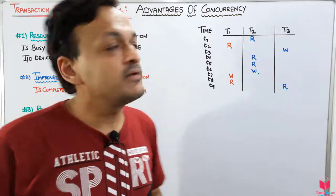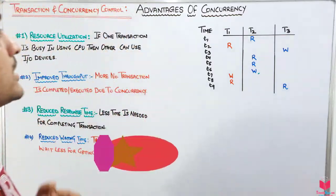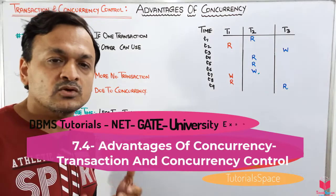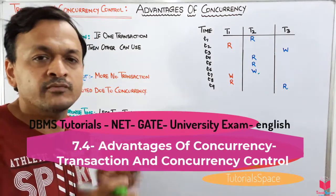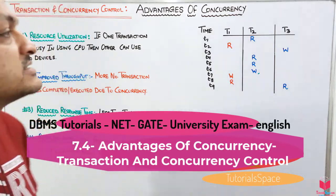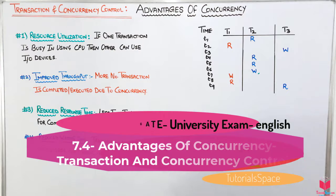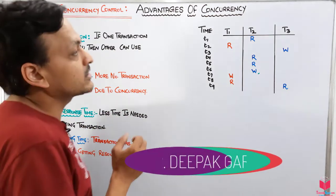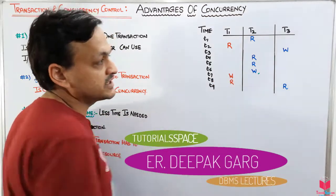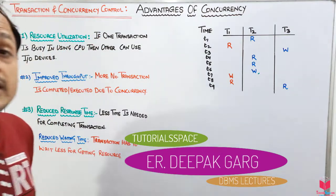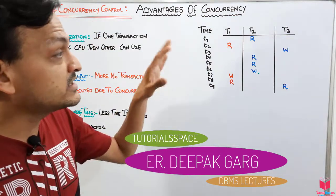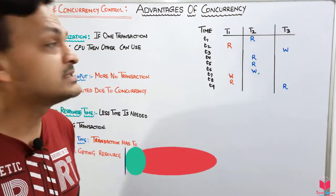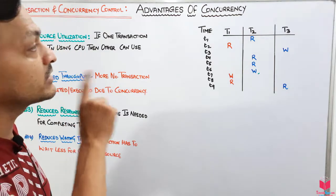Hello guys, today we will discuss the advantages of concurrency. First, let's briefly revisit what concurrency is. In concurrency, we have two or more transactions and we want to execute their instructions simultaneously — that is the concept of concurrency.